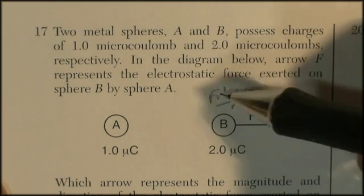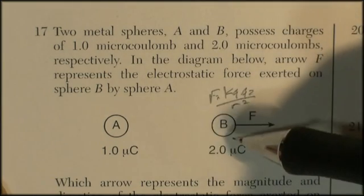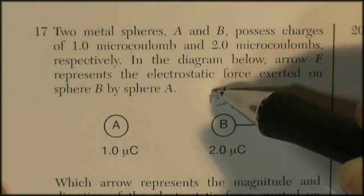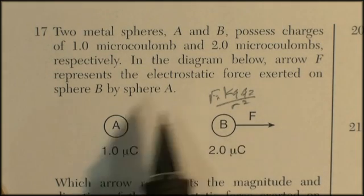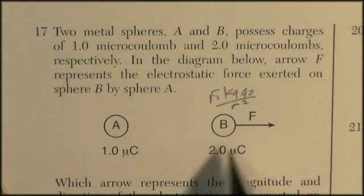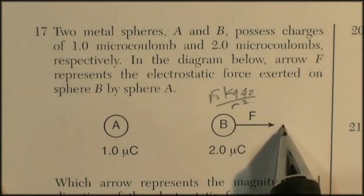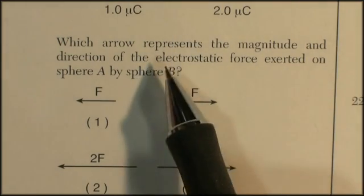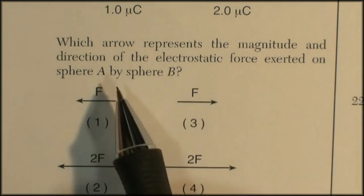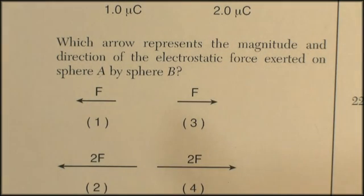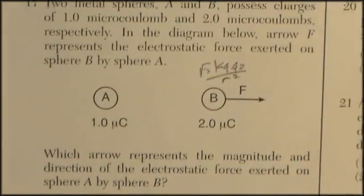You plug the numbers in if you wanted to, multiply by k divided by r squared, which really isn't given, and that gives you a force. And that force is exerted on B by A, so it's a repulsive force. And the question is, which arrow represents the magnitude and direction of the electrostatic force exerted on sphere A by sphere B?